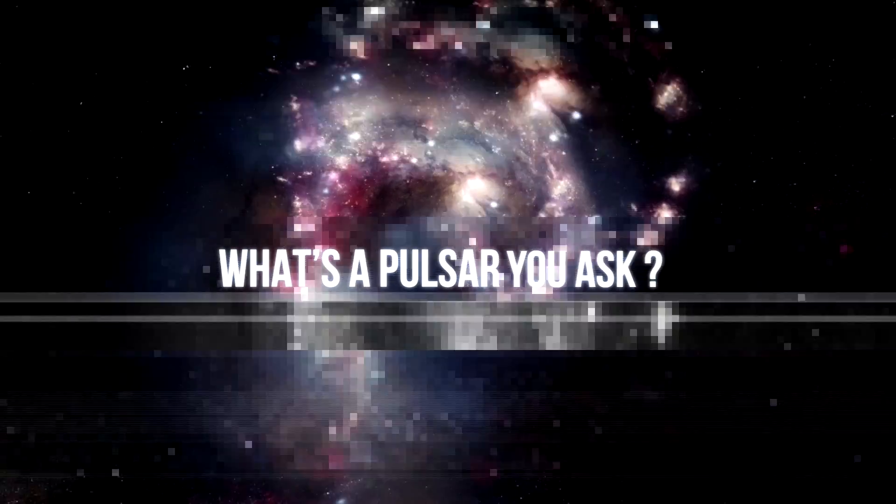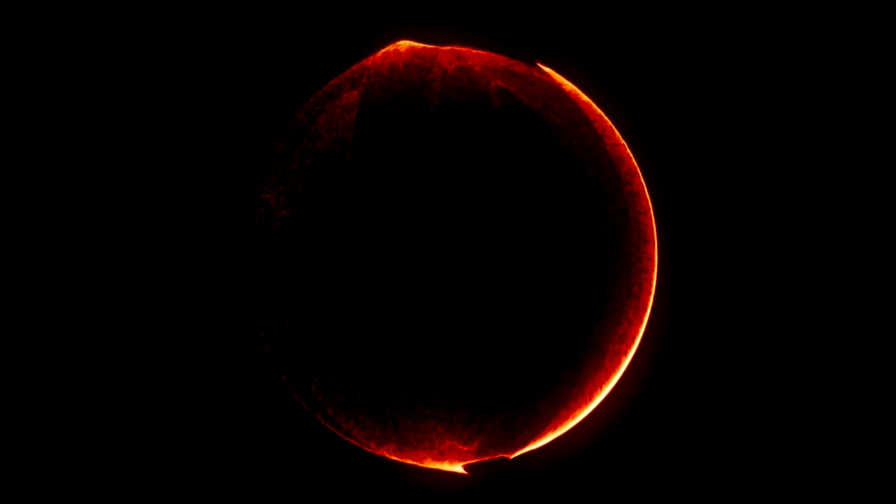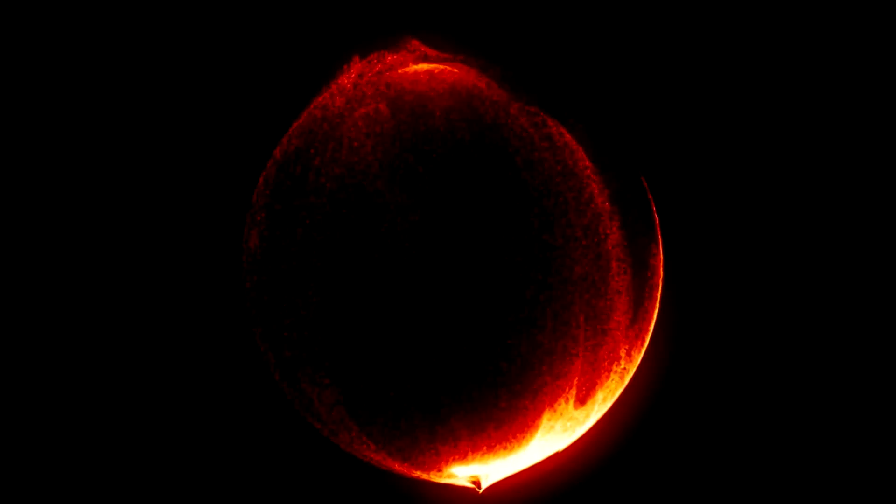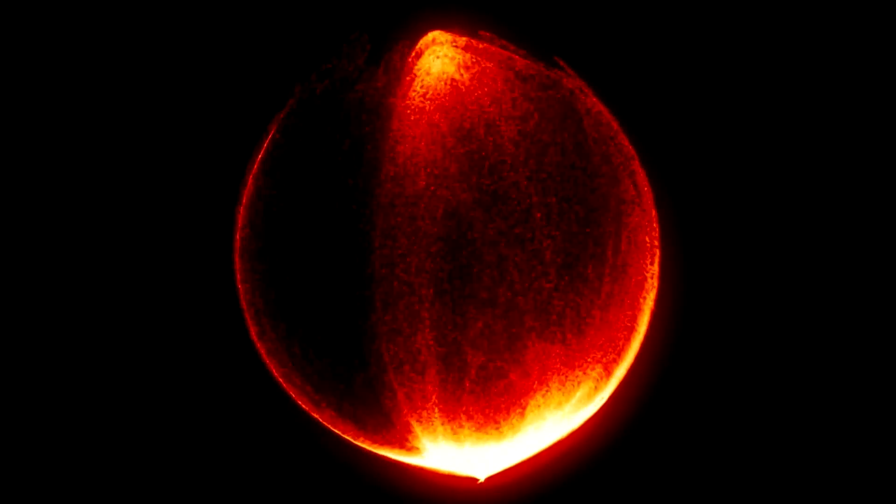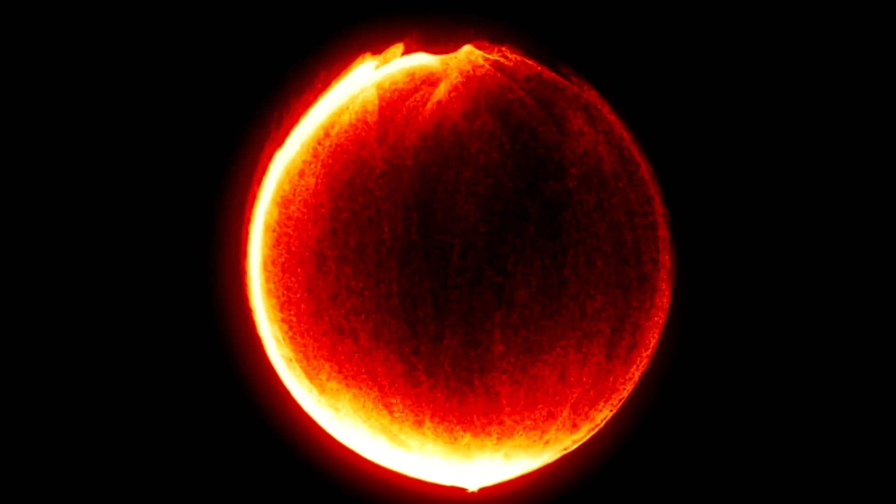What is a pulsar, you ask? Sometimes when a star becomes too big, the gravity will cause it to collapse on itself. The collapse will sometimes result in an extremely small, extremely dense star. All of the star's matter is condensed into a sphere only 18 miles across.